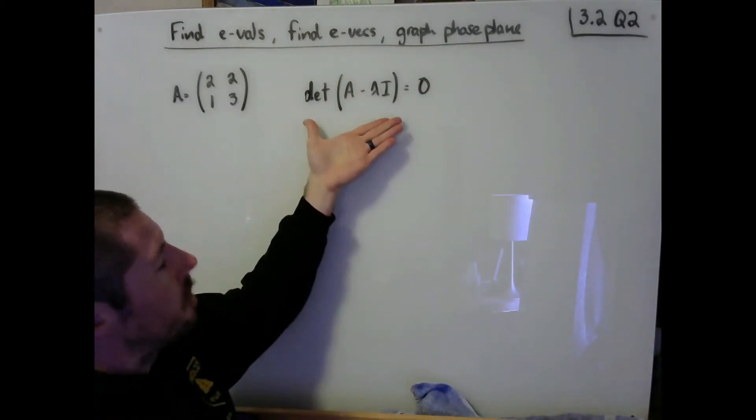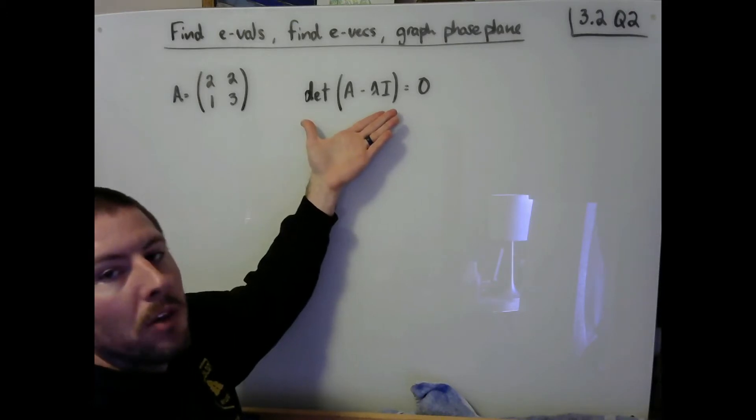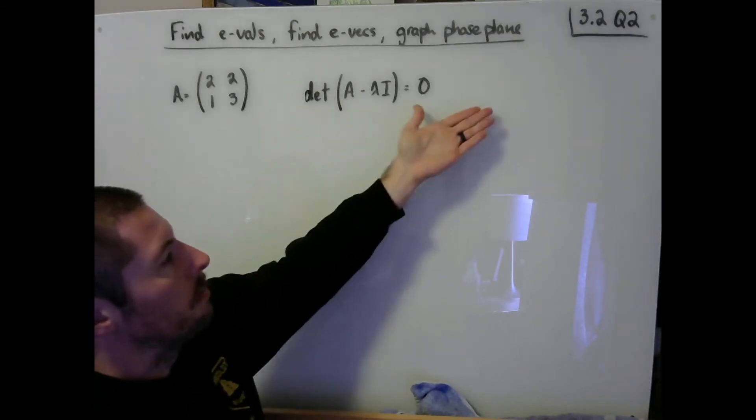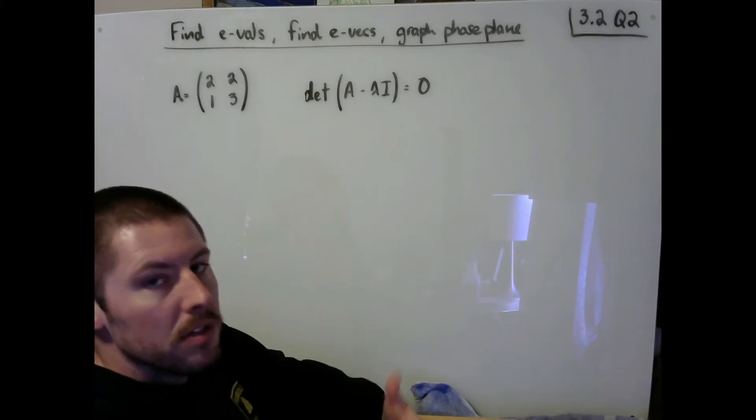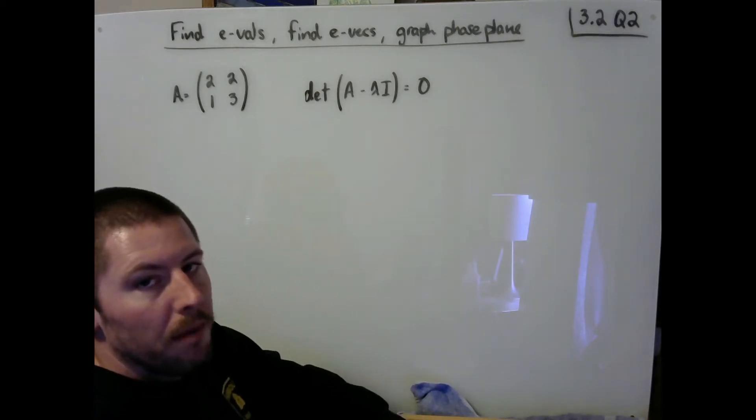Once we've computed the determinant, which will give us a characteristic polynomial, that characteristic polynomial will be set equal to 0. The roots of the characteristic polynomial will then be our eigenvalues.